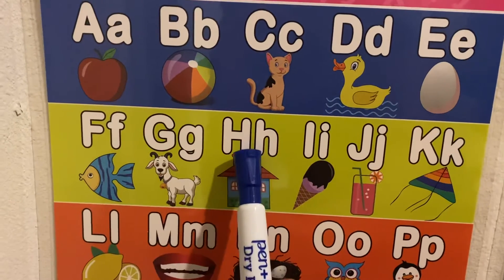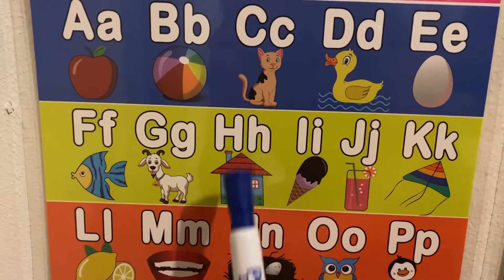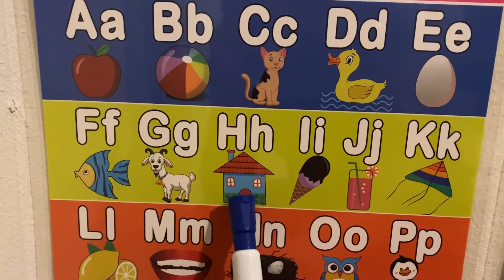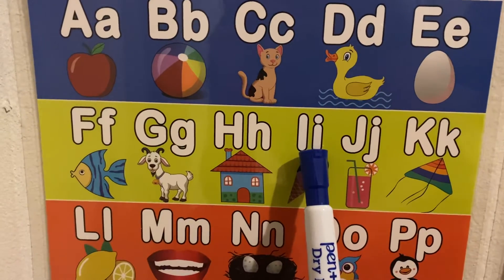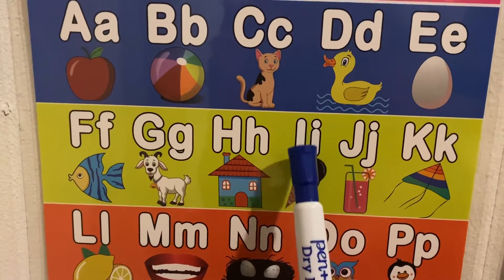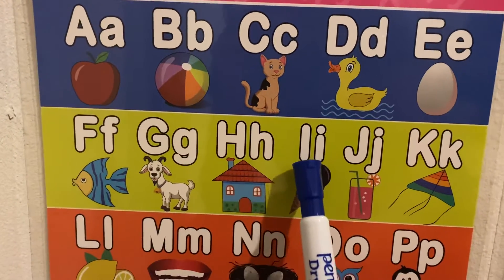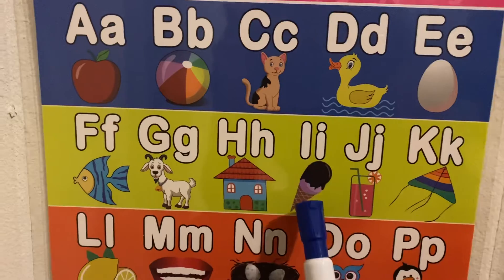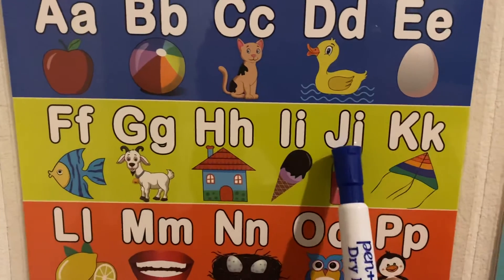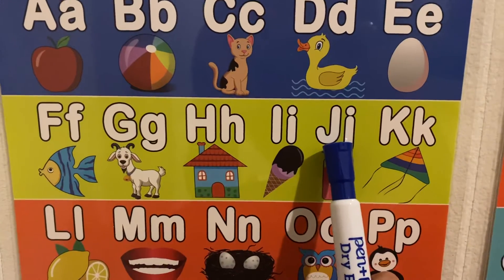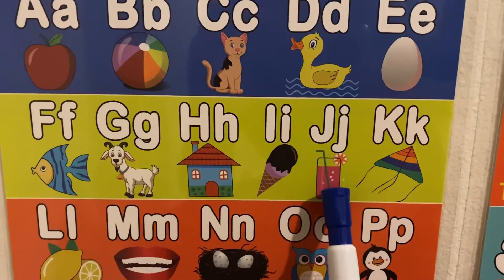H sound is H, like for house. I also has two sounds: I and I, like for ice cream. J sound is J, like for juice.